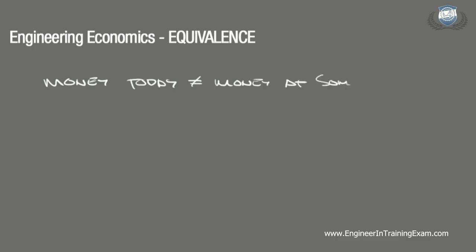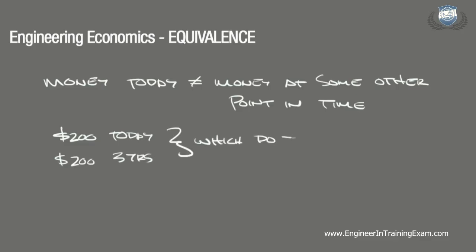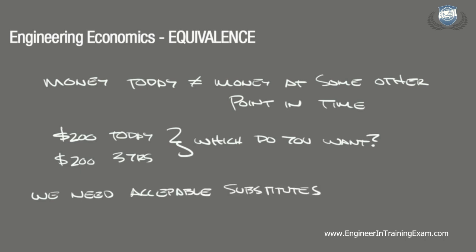Money today does not have the same value as money at some point in the future. Over a short period of time we can add up various sums and accept the net results, but this does not work over a longer period. For example, would you rather have $200 today or $200 in three years? This shows how money at different times may be equivalent in magnitude, but not acceptably equivalent. For this reason, we need to establish substitutes that make two unique scenarios — now or later — equivalent.